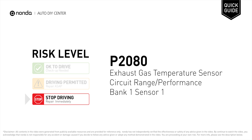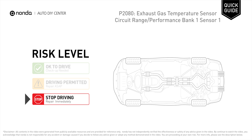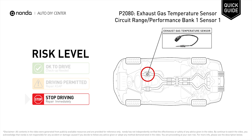P2080 is a diagnostic trouble code for Exhaust Gas Temperature Sensor Circuit Range or Performance Bank 1 Sensor 1. Under this circumstance, stop driving and repair your vehicle immediately. It indicates that the ECM has detected a malfunction or fault in the Exhaust Gas Temperature Sensor Circuit Bank 1 Sensor 1.